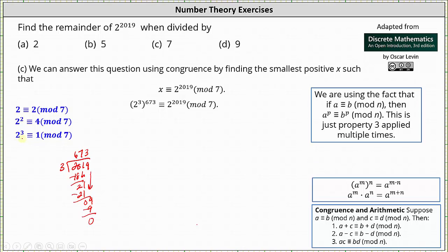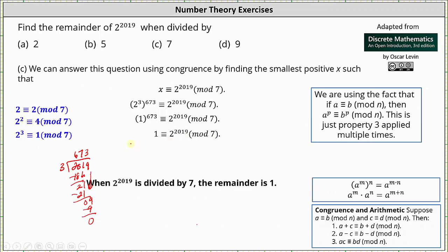Because 2 cubed is congruent to 1 mod 7, we can replace 2 cubed with 1. And 1 to the power of 673 is equal to 1, giving us 1 is congruent to 2 to the power of 2019 mod 7, indicating when 2 to the power of 2019 is divided by 7, the remainder is 1.